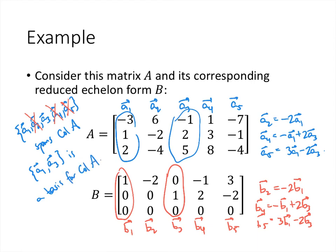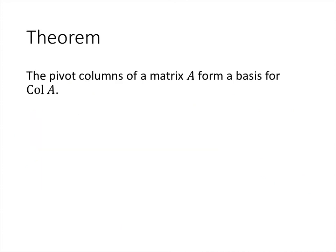Notice that those two columns are the pivot columns in matrix A. This leads us to the theorem that the pivot columns of a matrix form the basis for the column space of A. Of course, which columns are the pivot columns isn't always immediately obvious, so we may have to do some row reduction to identify them.